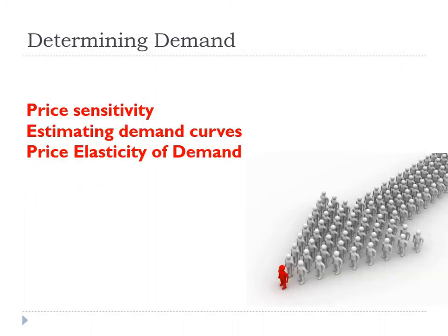The second step in pricing is to determine the demand. Demand is a very important element to understand while fixing the price of any product because it shares a very important relationship with price. From managerial economics, you know about the price-demand curve — when you increase the price, demand changes, and there is an inverse relationship between the two. Demand is understood by looking at the price sensitivity of the market. If by increasing price even a little the demand is heavily affected, the market is price sensitive.